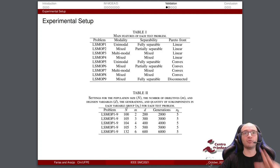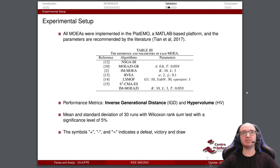For the MOEAs, all MOEAs were implemented within PlatEMO, a MATLAB-based platform, and the parameters are recommended by the literature. Here are the parameters from the literature. The performance metrics is inverse generational distance IGD and hypervolume HV. The mean and standard deviation of 30 runs with Wilcoxon rank sum test with a significance level of 5% is taken. The symbols plus, minus, and approximately indicate a defeat, a victory, and draw.